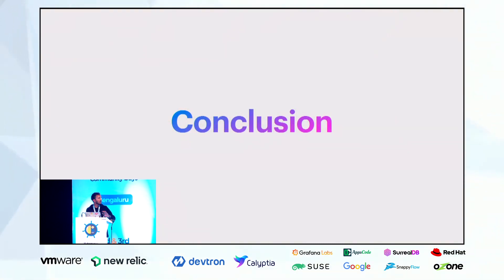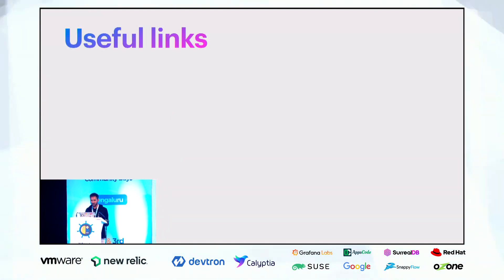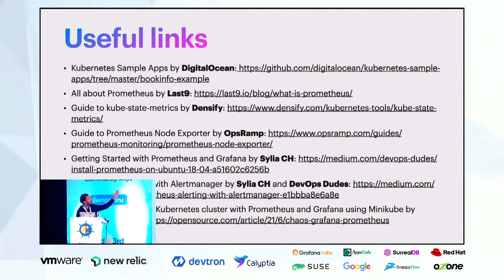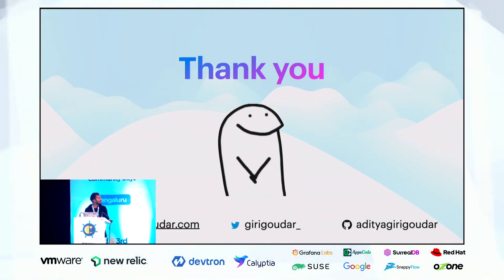In conclusion, when you have these metrics you get an overview of the observability of your Kubernetes infrastructure, and with alerts you can resolve issues faster and get a clear picture of the state of your cluster. Here are useful links — articles from DigitalOcean, Last9, Densify, OpsRamp, DevOps tools, and Medium. Thank you so much everyone!